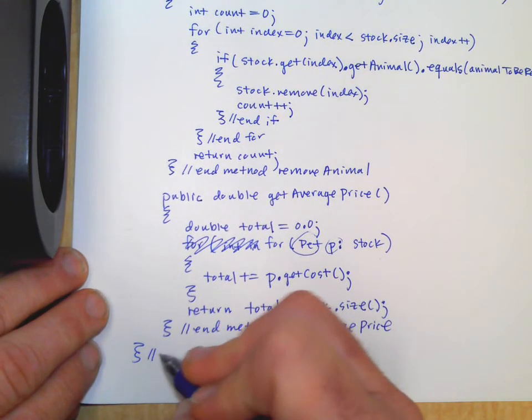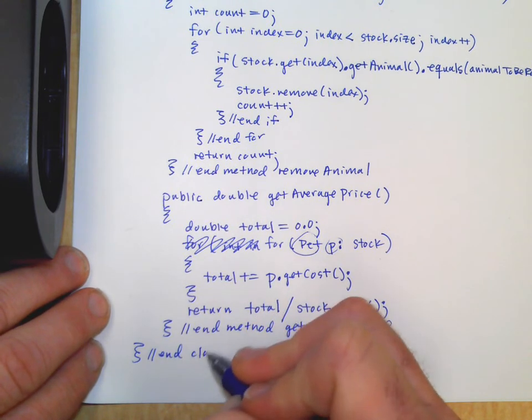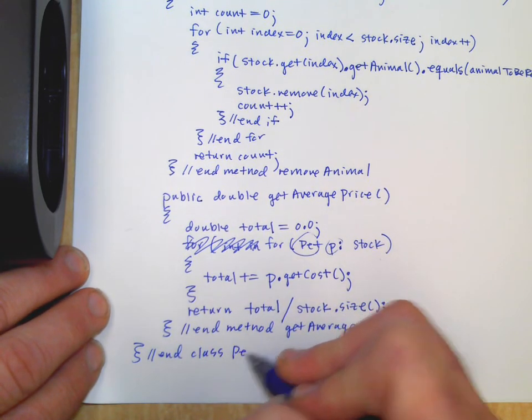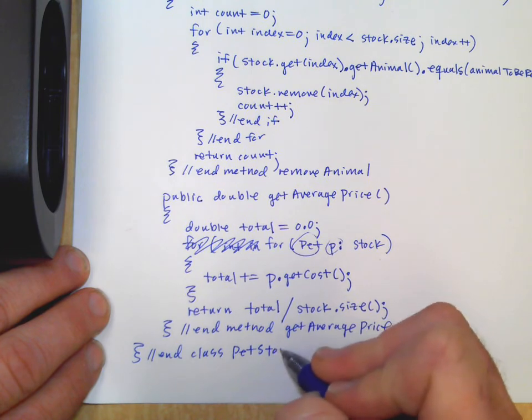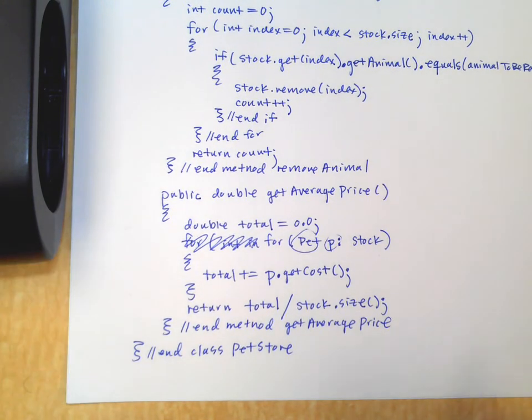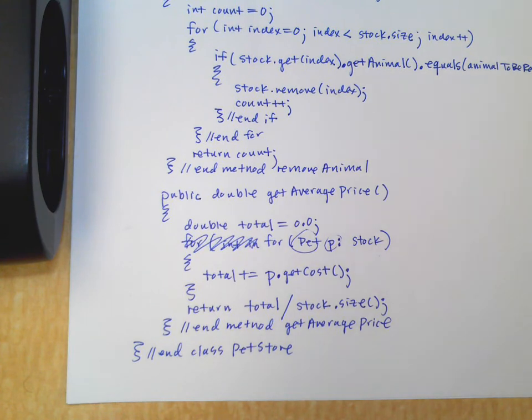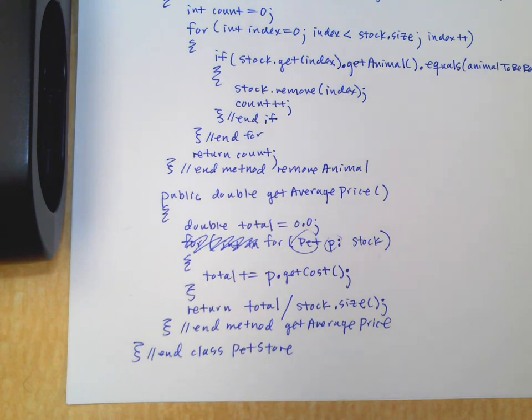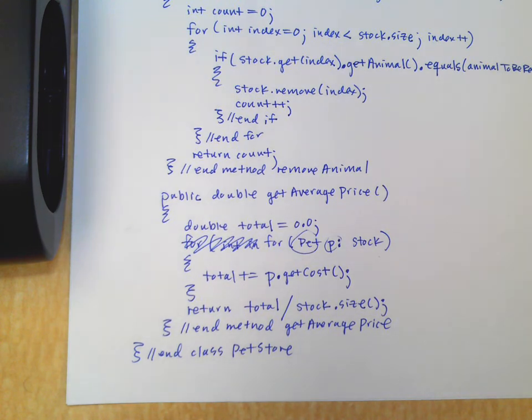All right. End class pet store. Anyway. Some other things to think about. When you're studying for your test. Are string methods. Index of. Dot equals. Substring. We've been doing a lot of string stuff lately. And just kind of the logic of looking for certain things that are true in an array and array list and objects. But anyways. That's it.